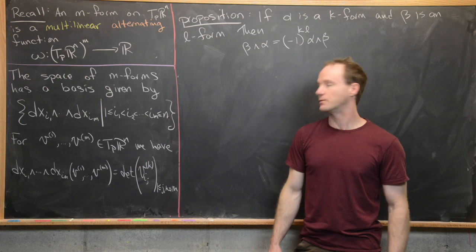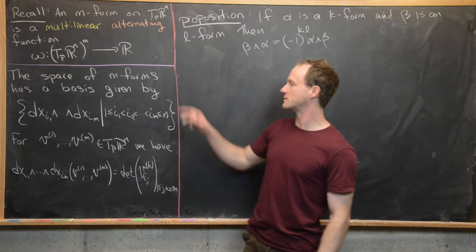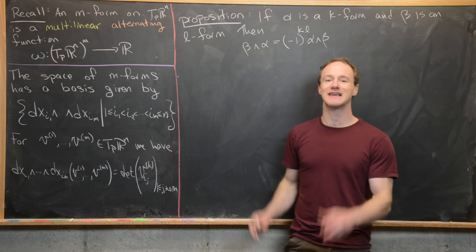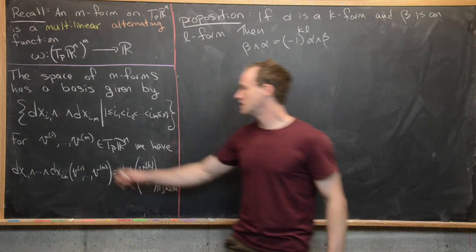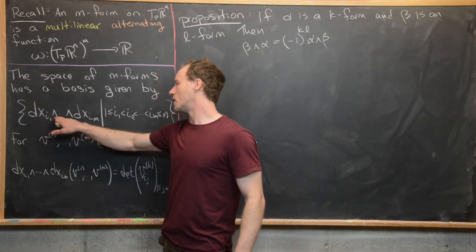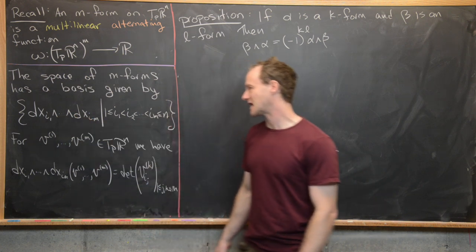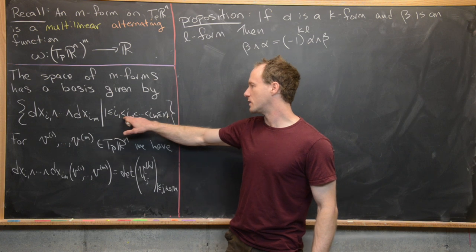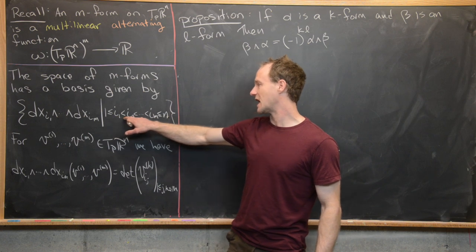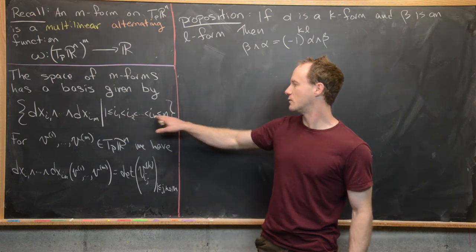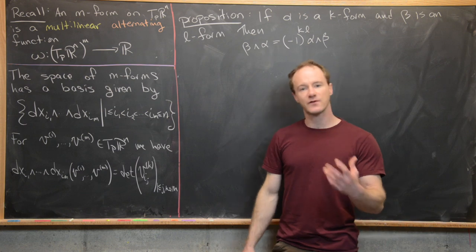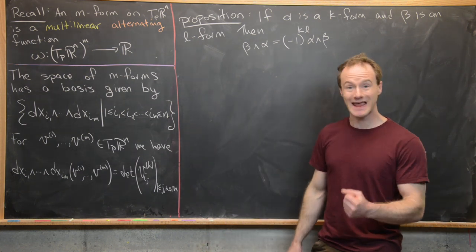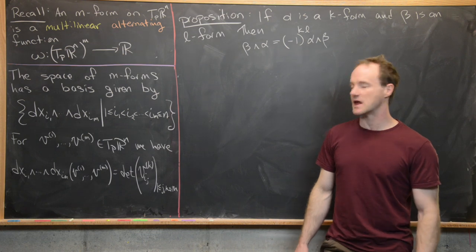We argued before that the space of m-forms has a basis given by the elementary m-forms dxᵢ₁ ∧ ··· ∧ dxᵢₘ, where 1 ≤ i₁ < i₂ < ··· < iₘ ≤ n. In the last video we proved that this space is n-choose-m dimensional.